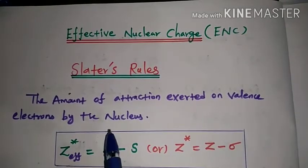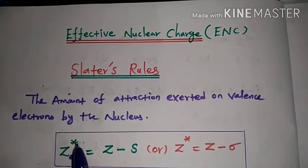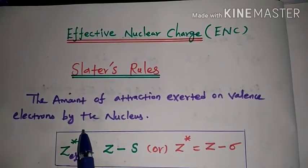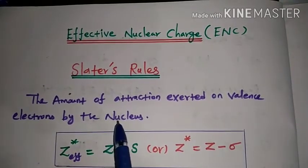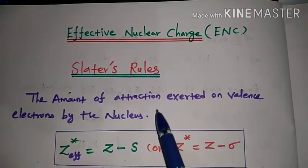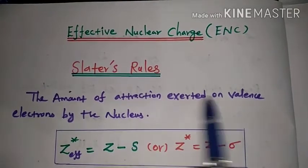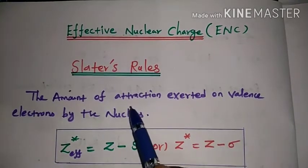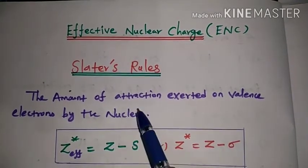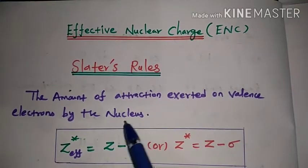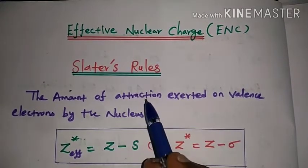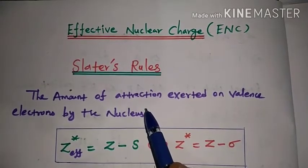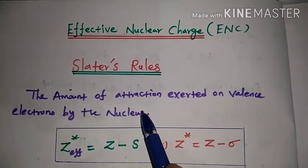In the nucleus, electrons experience attraction. The nucleus is positive, electrons are negative, so there is attraction in the atom. The influence exerted on electrons is the force of attraction, and this influence is the effective nuclear charge.